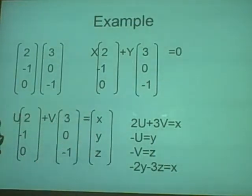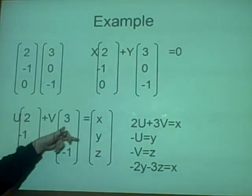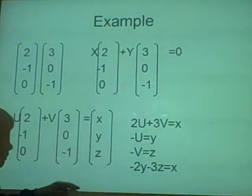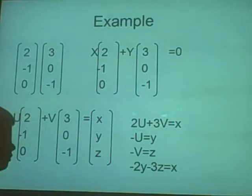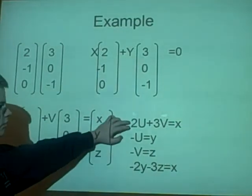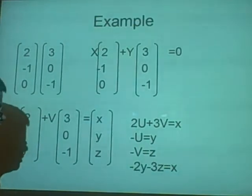So x, y, and z represent every point. Writing this down gives us -v equals z, -u equals y, and 2u plus 3v equals x.